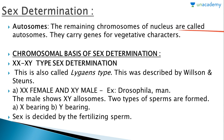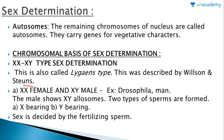Autosomes are the remaining chromosomes of the nucleus; they carry genes for vegetative characters. The first type of chromosomal sex determination is the XX-XY type, also called the Lygaeus type of sex determination, described by Wilson and Stevens.